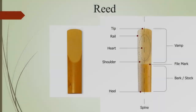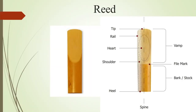The second most important part is the reed, without which we cannot make sound. Reed is made up of cane wood, which is fixed on the table of the mouthpiece with the help of a ligature. It comes in different numbers such as 1, 1.5, 2, 2.5, 3 and so on.